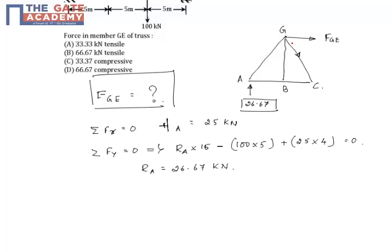Taking moment about C, what you will get is 26.67 into distance that is 5 and 5, total will be 10, so 26.67 into 10 meter distance.